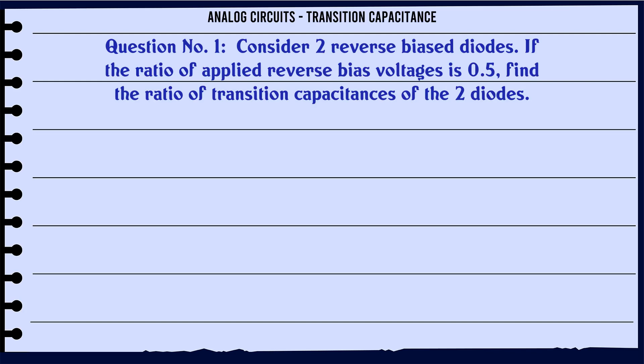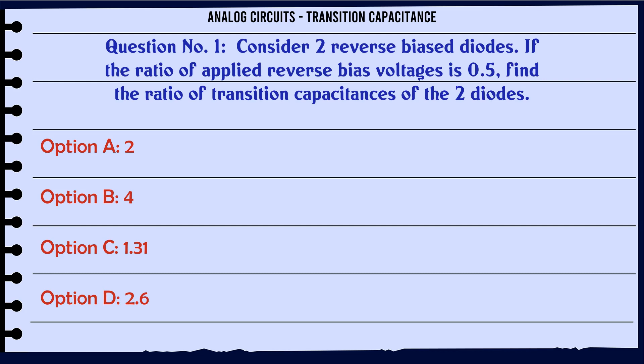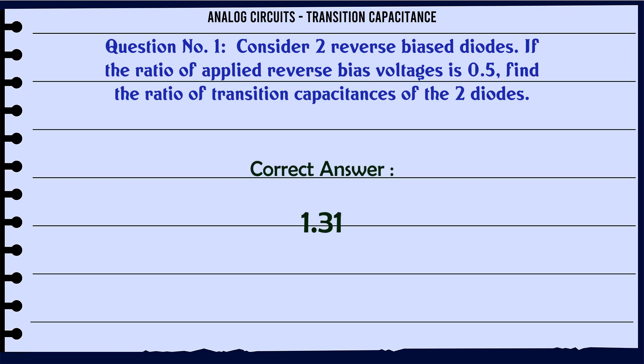Consider two reverse biased diodes. If the ratio of applied reverse bias voltages is 0.5, find the ratio of transition capacitance of the two diodes. A: 2, B: 4, C: 1.41, D: 2.6. The correct answer is 1.41.